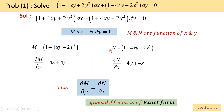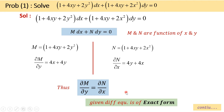Now differentiate these two terms partially. We get ∂m/∂y = 4x + 4y. Similarly, for n, ∂n/∂x = 4y + 4x. This gives us ∂m/∂y = ∂n/∂x. Thus, the given equation is in exact form.